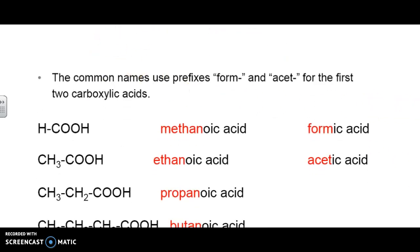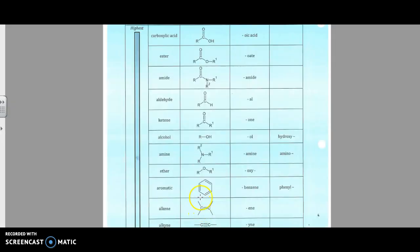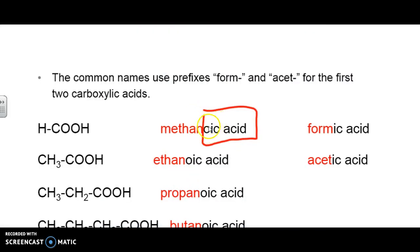When we're naming carboxylic acids, the suffix is going to be oic acid. If you look on your priority list sheet, you'll see that carboxylic acids and esters, which is our next lesson, are always given the highest priority. In the examples here, we've got methanoic acid. It's methane because there's one carbon, also known as formic acid.